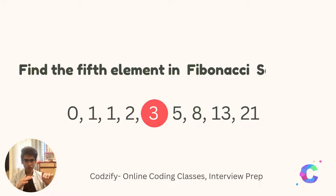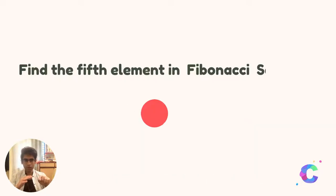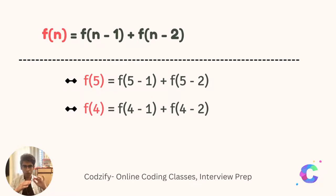Suppose we have a Fibonacci sequence and we have to find the fifth element. As we know, the formula for the Fibonacci sequence is f of n equals f of n minus one plus f of n minus two.